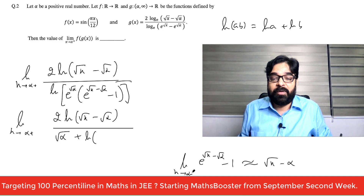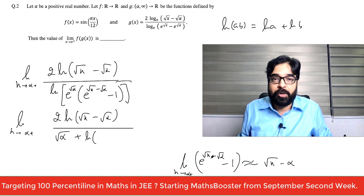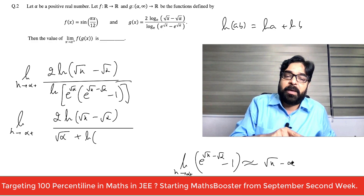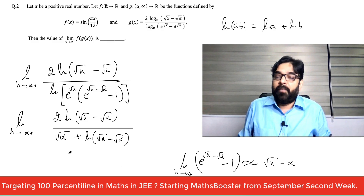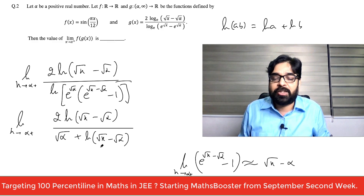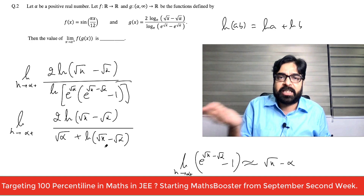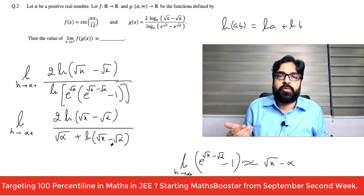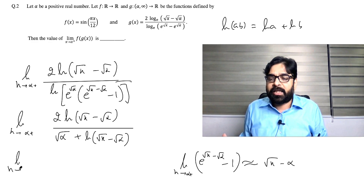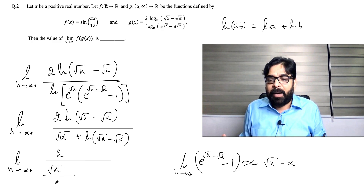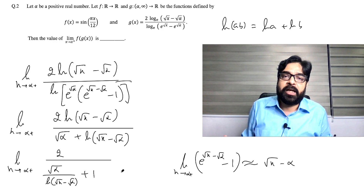As x→α, (√x − √α) approaches zero, so e^(√x−√α) − 1 can be approximated as (√x − √α). The expression becomes limit x→α⁺ of 2 ln(√x − √α) divided by [√α + ln(√x − √α)]. As x→α⁺, (√x − √α)→0, so ln(√x − √α)→ −∞. Dividing by ln(√x − √α), the numerator gives 2 and the denominator gives [√α / ln(√x−√α) + 1].